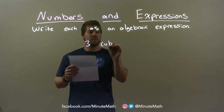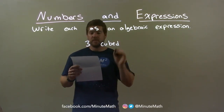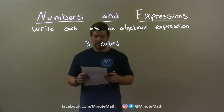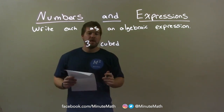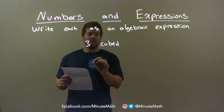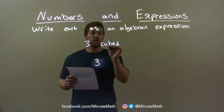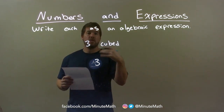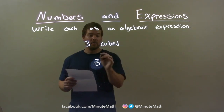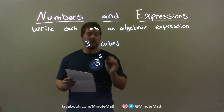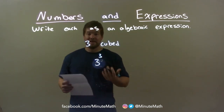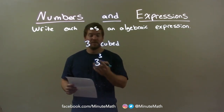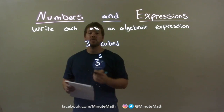3 cubed. So we have 3 cubed. Well, we start with 3, and we know cubed means to the third power. So we put an exponent here of 3, and that's it. We have our final answer: 3 cubed.